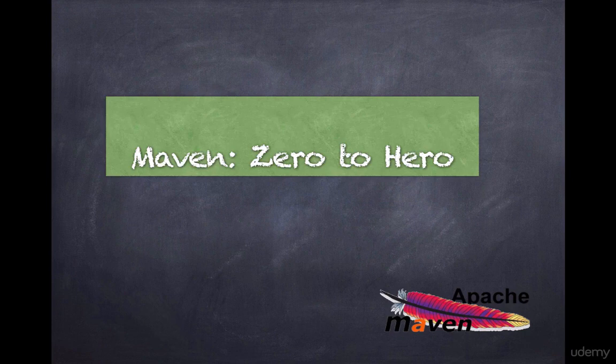In session 3, the course dwells upon Maven dependency management. It then discusses the GAV coordinates that Maven uses for uniquely identifying its artifacts, and finally it covers transitive dependencies and the impact they have on the builds.